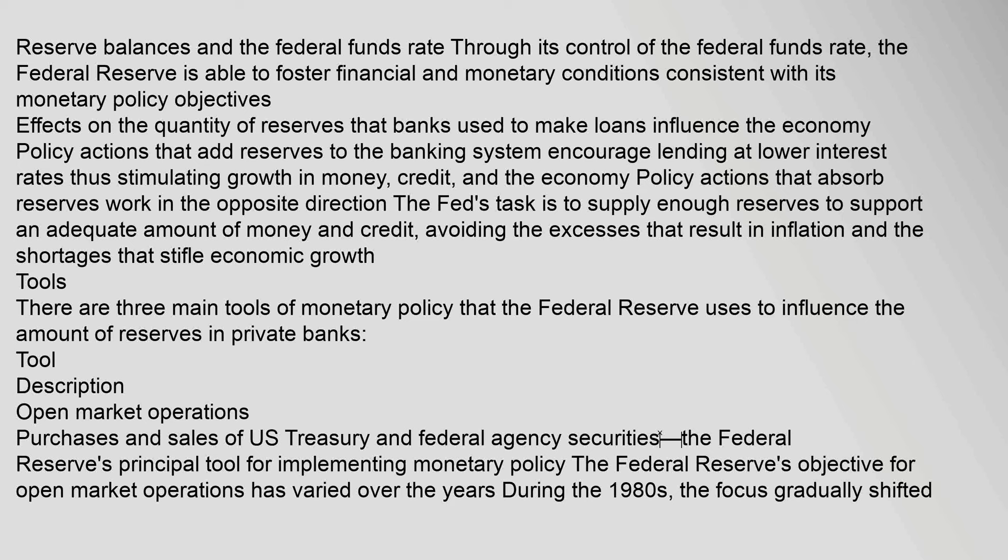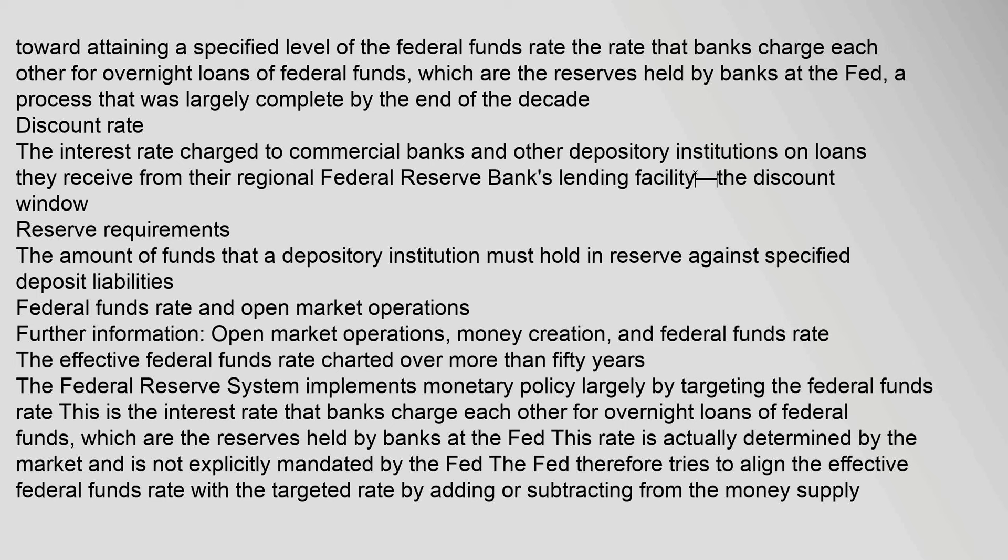There are three main tools of monetary policy that the Federal Reserve uses to influence the amount of reserves in private banks. Open market operations involve purchases and sales of U.S. Treasury and Federal agency securities — the Federal Reserve's principal tool for implementing monetary policy. During the 1980s, the focus gradually shifted toward attaining a specified level of the federal funds rate. The discount rate is the interest rate charged to commercial banks and other depository institutions on loans they receive from their regional Federal Reserve Bank's lending facility — the discount window. Reserve requirements are the amounts of funds that a depository institution must hold in reserve against specified deposit liabilities.